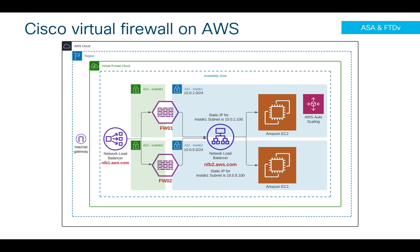Since I'm doing source NAT, the application server will respond back to the firewall from which the initial packet was seen. So it's a pretty simple architecture — place firewalls, use the new NLB feature, assign static IP addresses, and you are good to go.